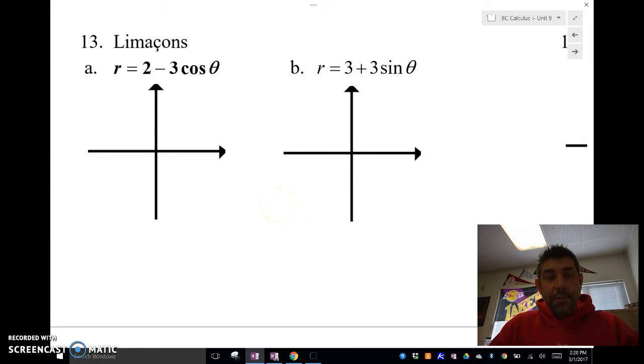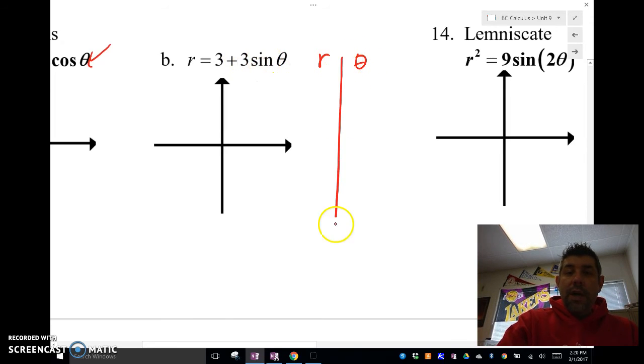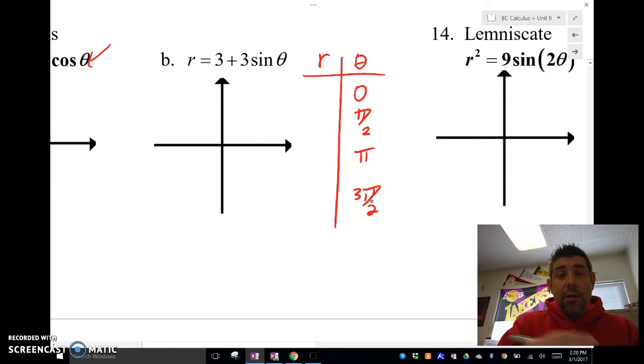Another one we have is called a Limasson. It's French, Limasson. So, I'll go ahead and graph that in a calculator in my next video. But I'm going to show you how to graph this by hand. So, when you're graphing Limassons by hand, you'll know it's a Limasson because it has a number plus something with a sine and cosine. And your R and theta values are just going to be your basic values, 0, pi over 2, pi, and 3 pi over 2, and so forth. So, we're going to use 0, pi over 2, pi, 3 pi over 2.